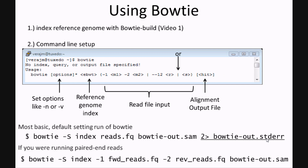If you were mapping paired-end reads, this command line would look like this, where we use the -1 and -2 options to designate our two separate read files.